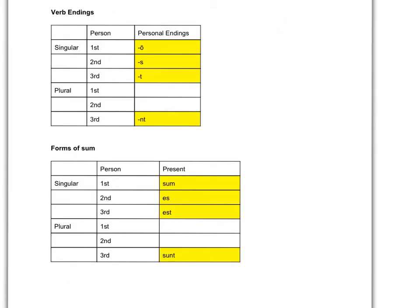Here we are again with everything that we've learned in a nice, organized chart format. This chart talks about the regular verb endings. Notice it has first, second, and third person. Singulars are on top: first person singular ends in O, second person singular ends in S, and third person singular ends in T. Down here on the bottom, we have the plural verb endings for regular verbs. Third person plural, which we've just learned, is NT.